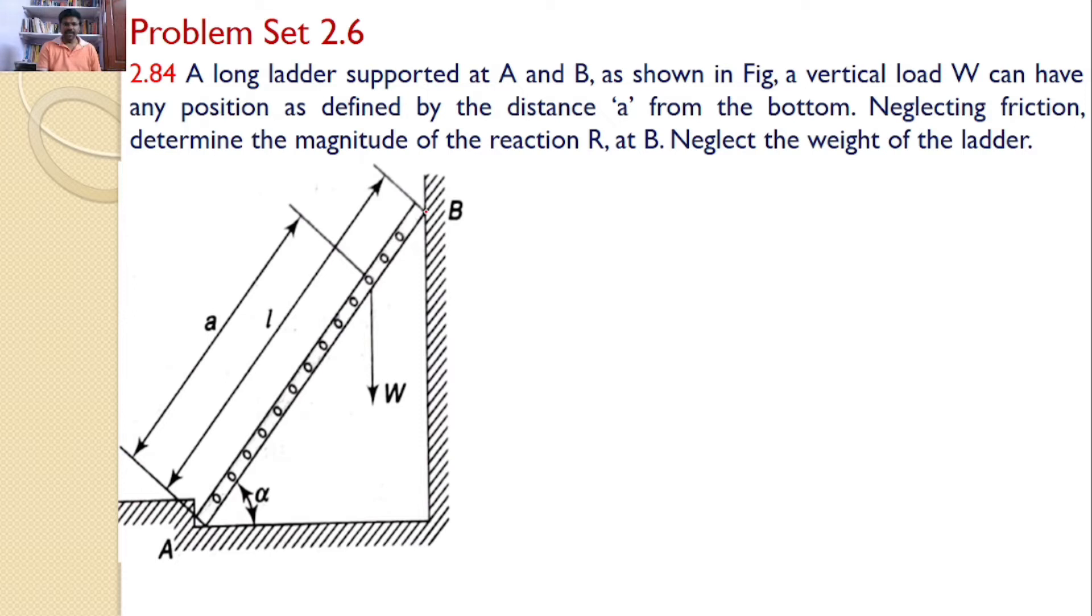That means here we can find a ladder. A, B is a ladder. The weight of the ladder is neglected. A weight W is acting on the ladder at a distance of a from the bottom. The total length of the ladder is given as L, and ladder makes an angle alpha.